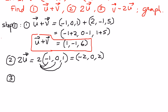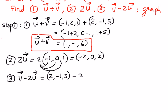The third question we want to answer is: what if we have vector v and we want to subtract 2 times vector u from it? Vector v is given as 2, negative 1, 5.